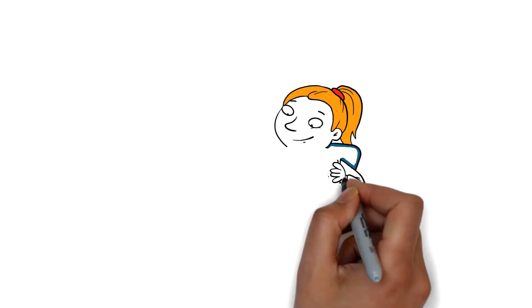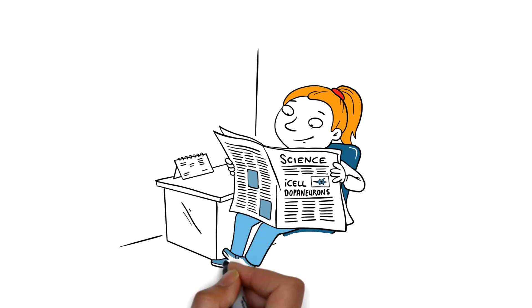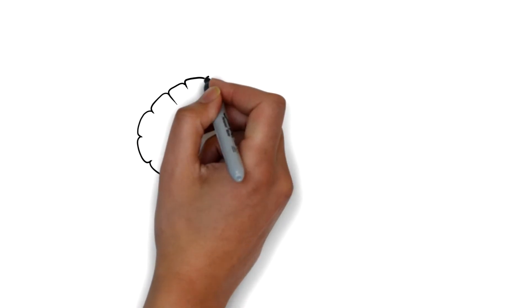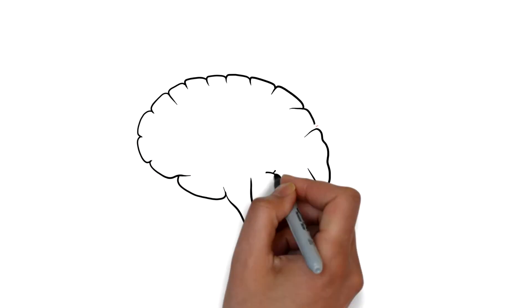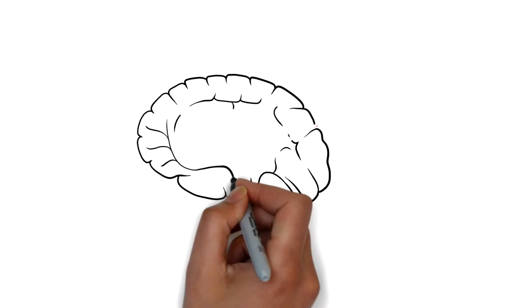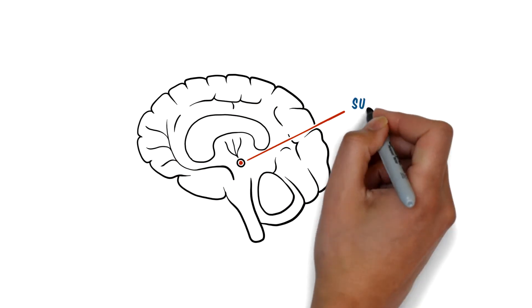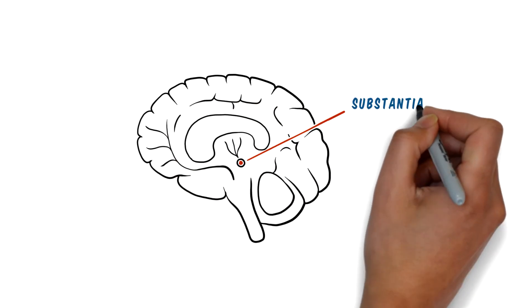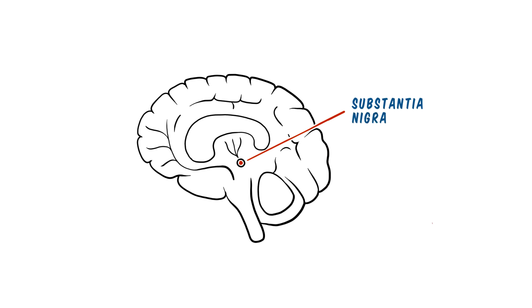At least that was the case until Amanda learned about iCell dopa neurons. These are fully functional, human, midbrain dopaminergic neurons made from induced pluripotent stem cells, or iPS cells. In other words, these neurons are biologically relevant.